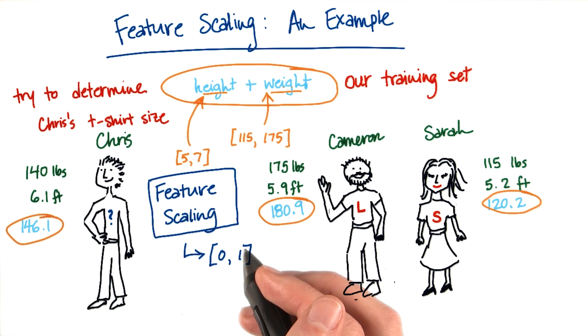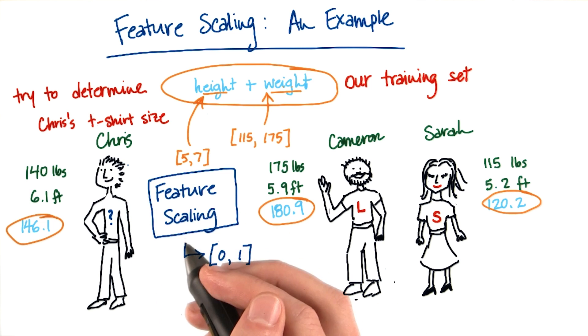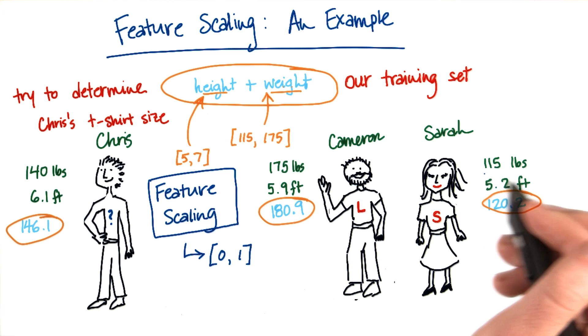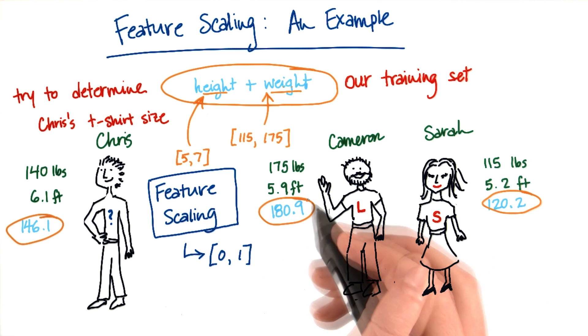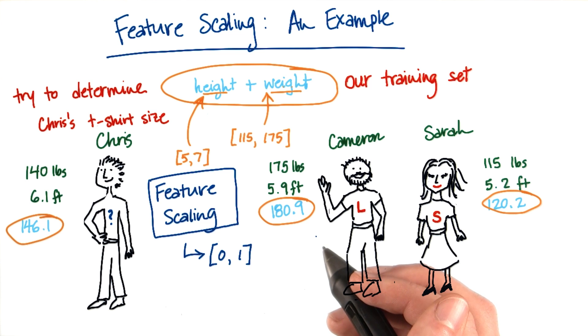Then when you add them together, weight won't completely dominate the equation anymore. And when that happens, you should get a much more sensible result for Chris's t-shirt size. Because even though he's a little bit closer to Sarah in weight, he's much closer to Cameron in height, and so he'll probably end up getting grouped with Cameron.